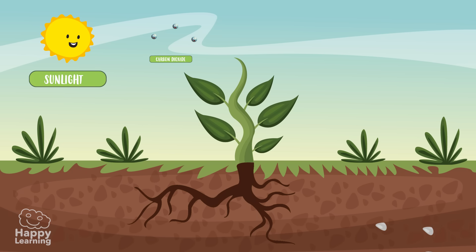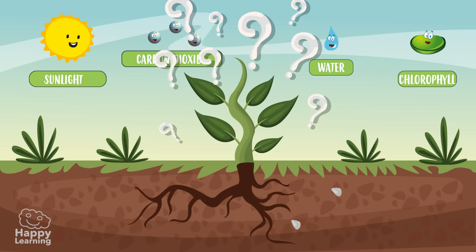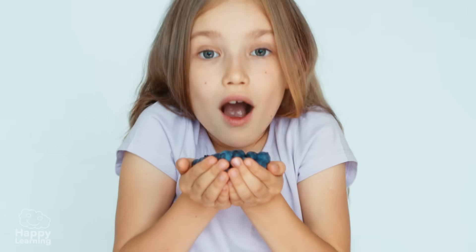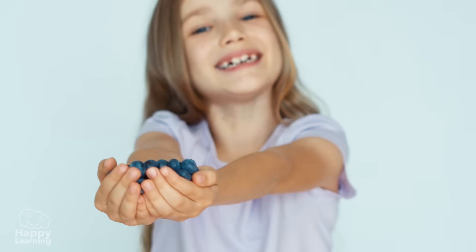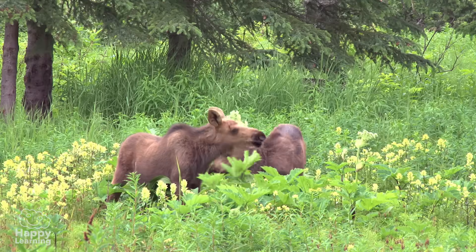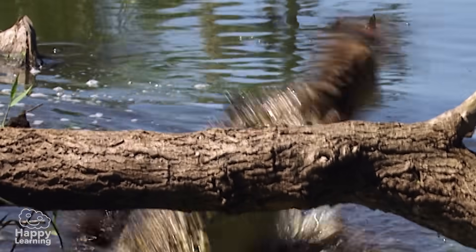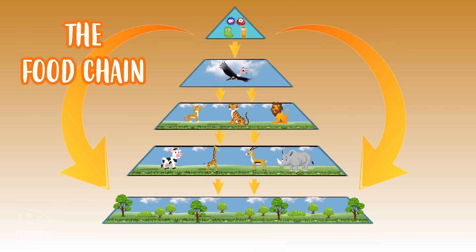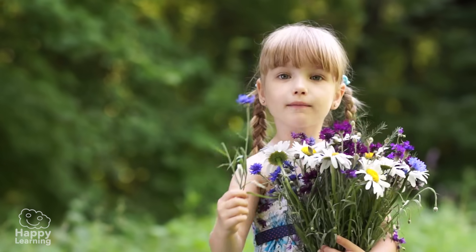Now we know how photosynthesis takes place, but why is it so important? Without plants there would be no life on earth. We wouldn't have oxygen to breathe or food to feed on. You already know that herbivores eat plants and carnivores eat herbivores. Plants are fundamental for the food chain, and they are also fundamental for our respiration.